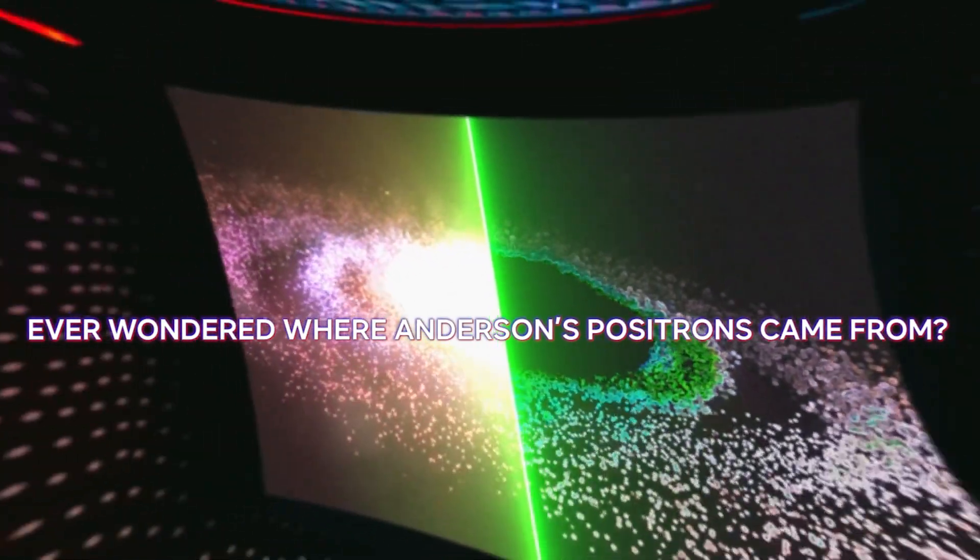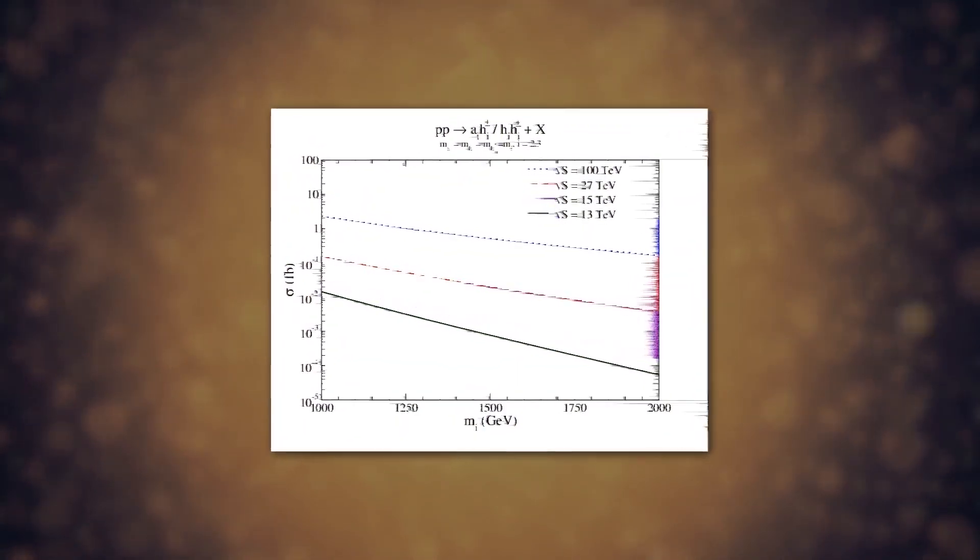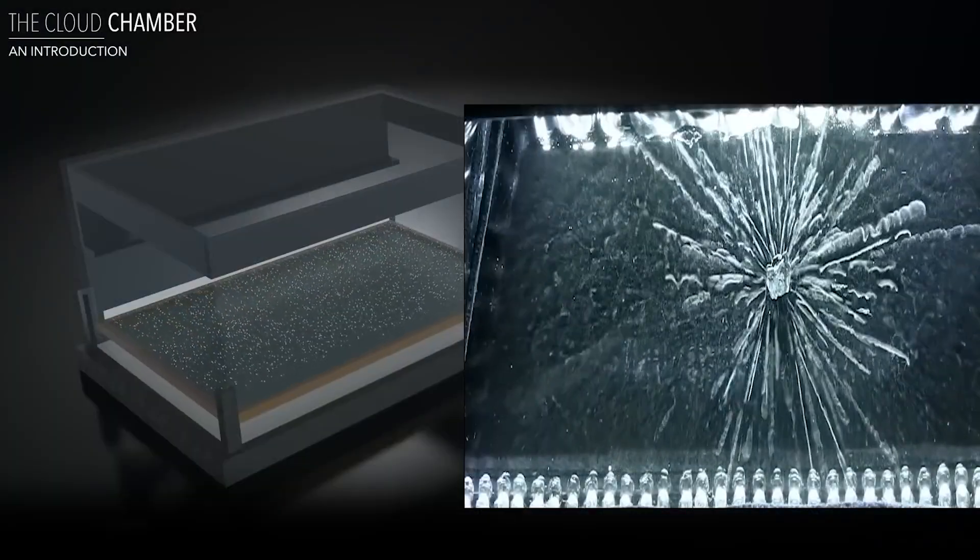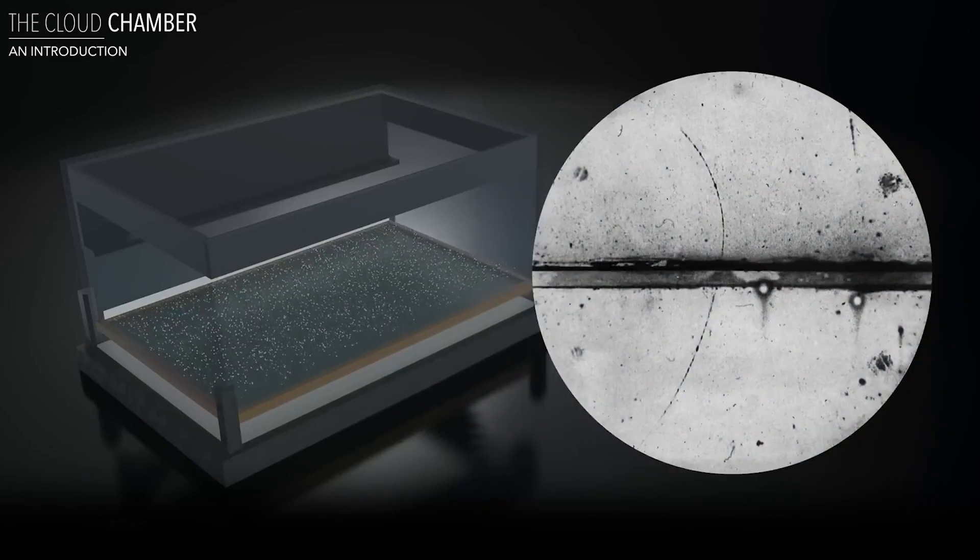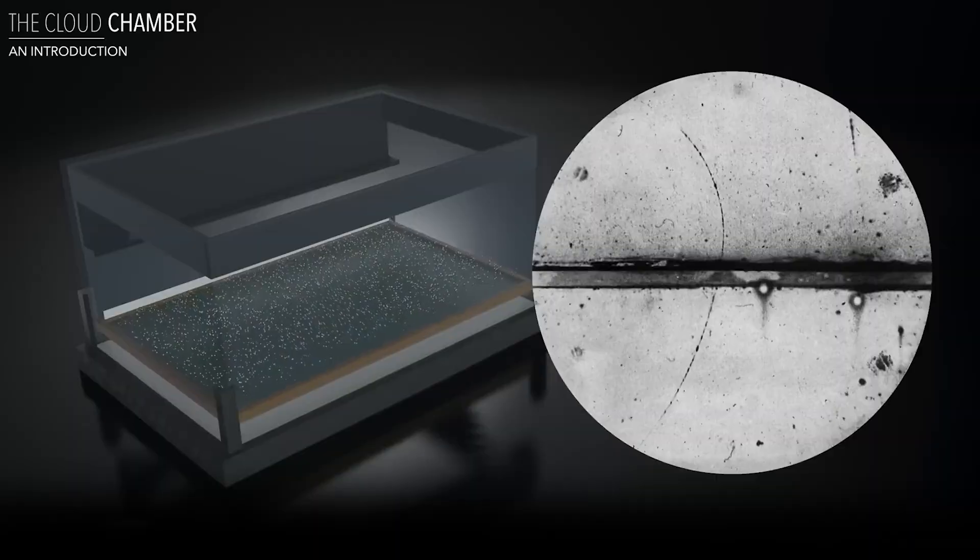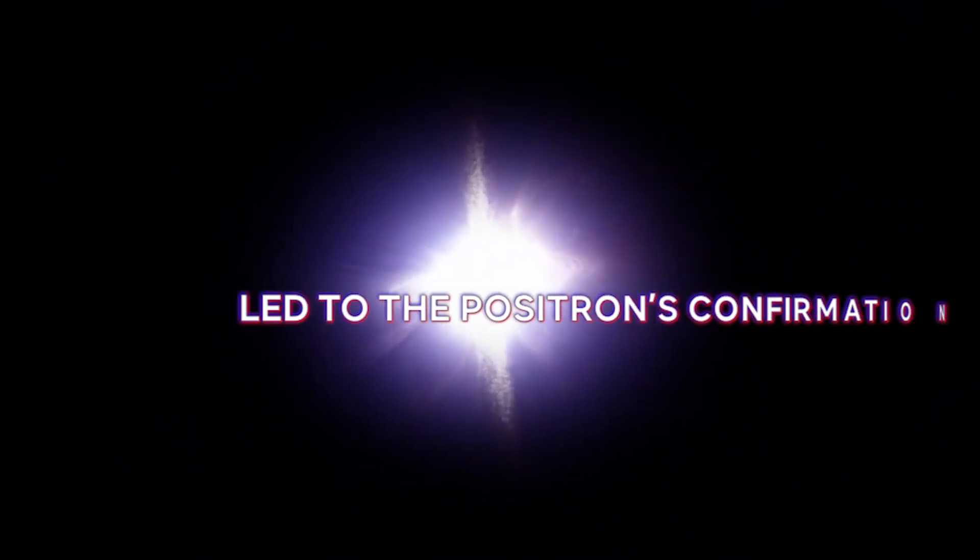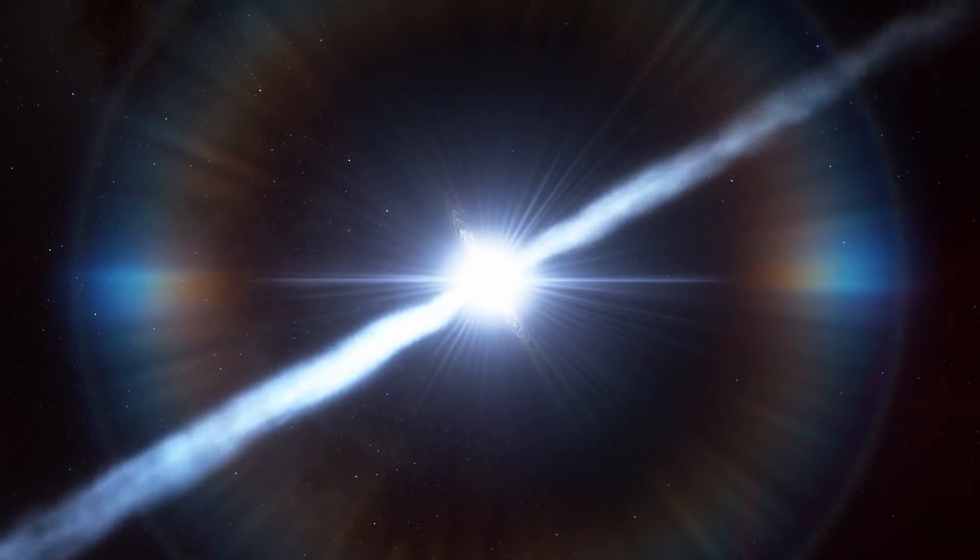Ever wondered where Anderson's positrons came from? These elusive particles were found in atmospheric showers created by high-energy cosmic rays mingling with Earth's atmosphere. Anderson used a cloud chamber to observe positrons. As particles zipped through, they left a bubbly trail behind. With a magnetic field, the particle's path curved based on its charge. Anderson's positrons bent like electrons, but in reverse. Curiously, these unique tracks were seen years before during Dirac's prediction, but nobody pursued them. Anderson's persistence led to the positron's confirmation, echoing Dirac's boldness in reinterpreting negative energy electrons, unveiling a whole new layer of the universe.